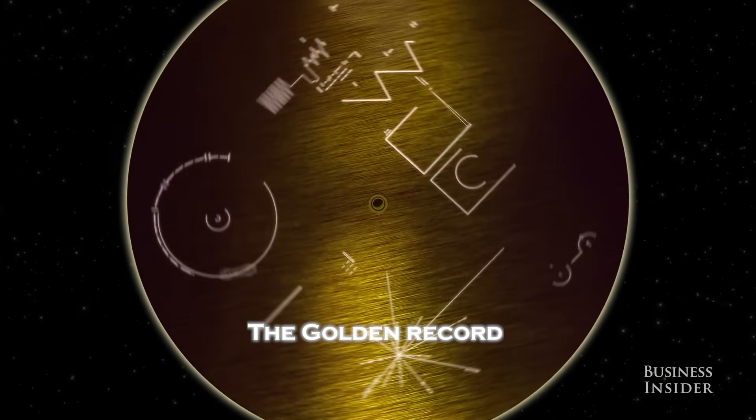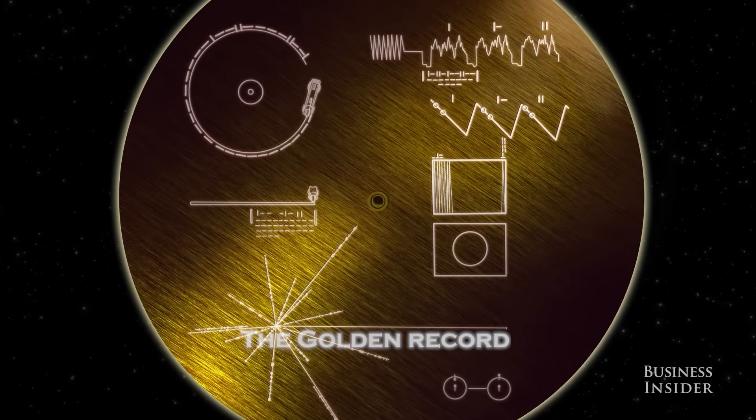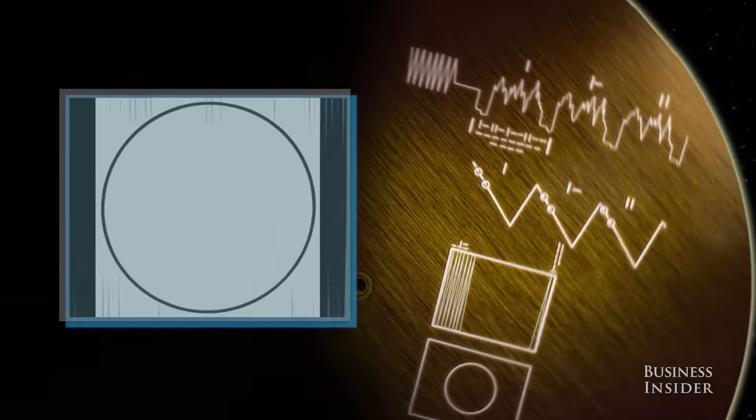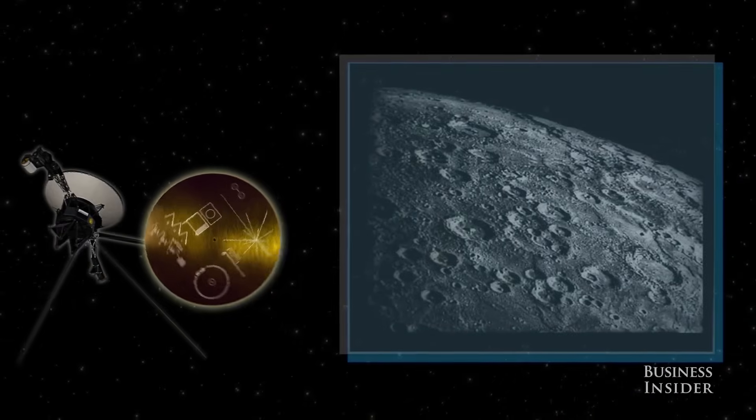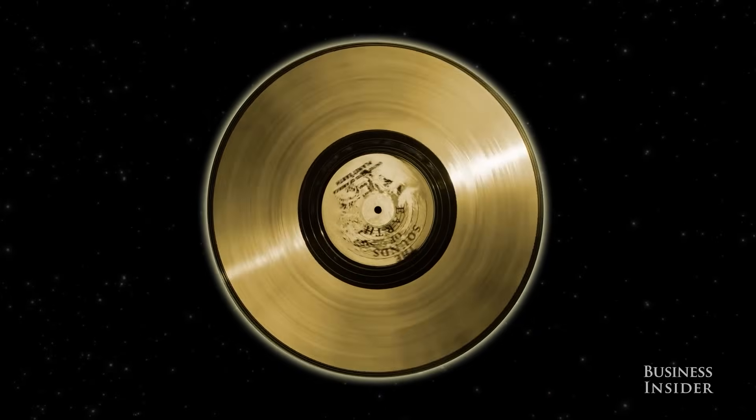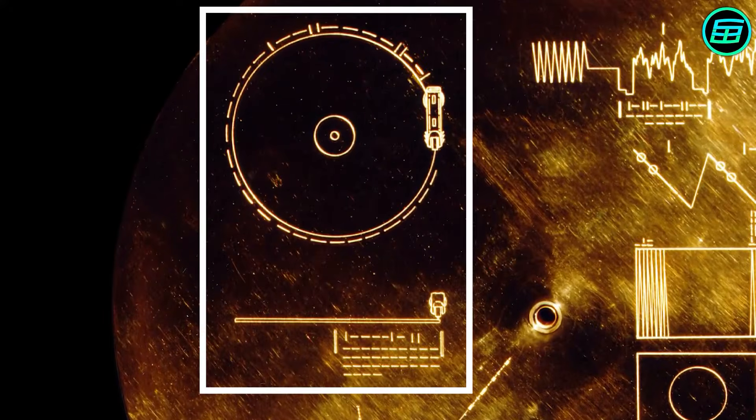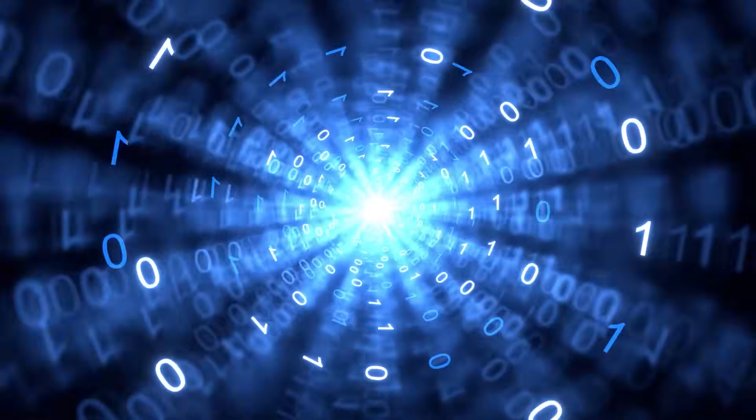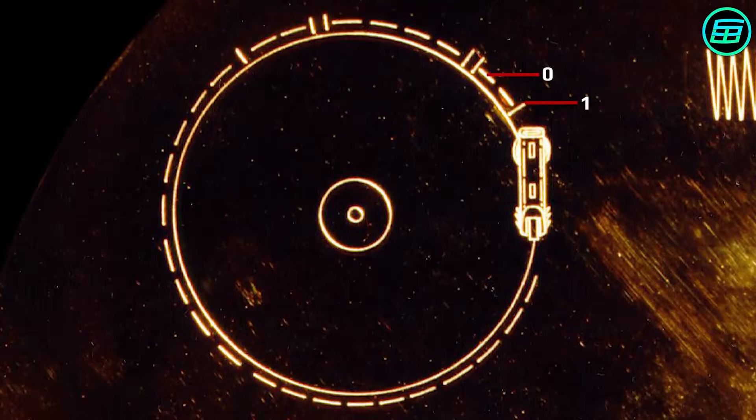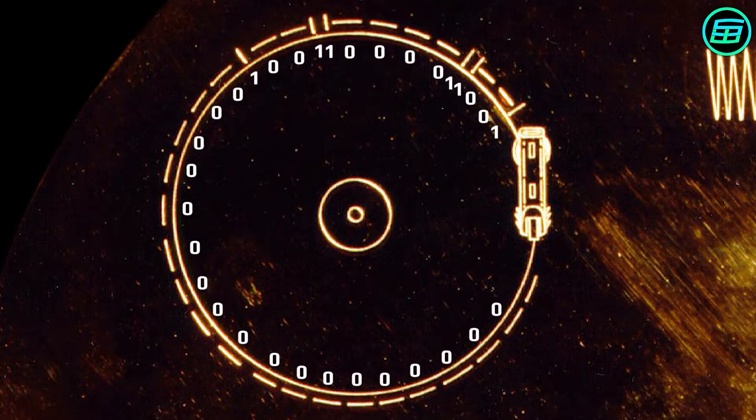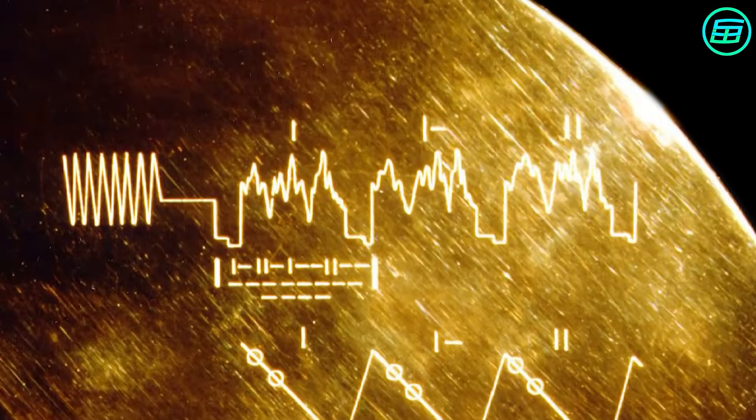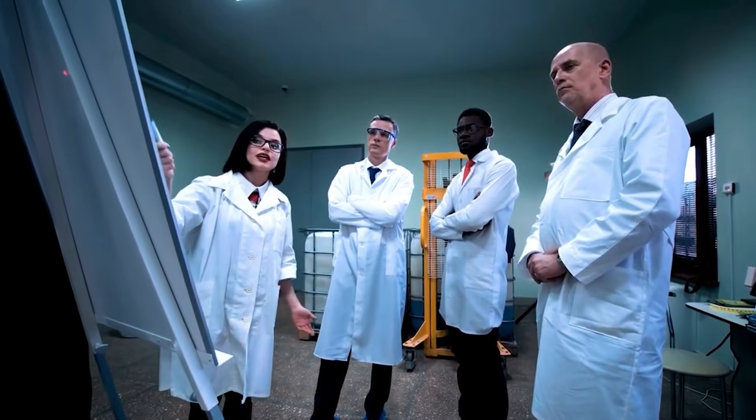Voyager 1 famously carries the Golden Record, a phonograph containing music, sounds, images, and scientific data from Earth, intended to communicate our civilization to any potential discoverers. But what few people know is that the original digital blueprint of the record includes additional metadata never officially released to the public, coordinates, quantum encoding maps, and even time-based logic puzzles embedded in its analog spiral.